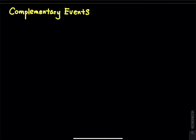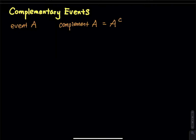So let's say I have an event A. I will write event A and then the complement of event A. We write A^C — the superscript C stands for complement. Some textbooks don't use C; they use an apostrophe, which also stands for complement.